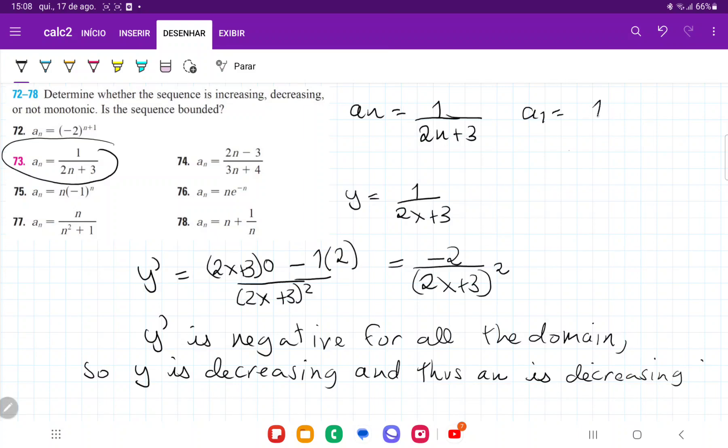a1 is going to be equal to 1 divided by 2 times 1 plus 3 is 1 over 5. So we can say that a n is going to be less than or equal to 1 fifth.